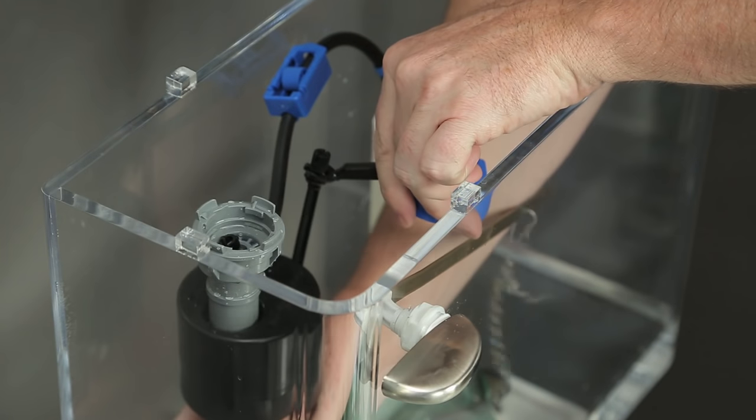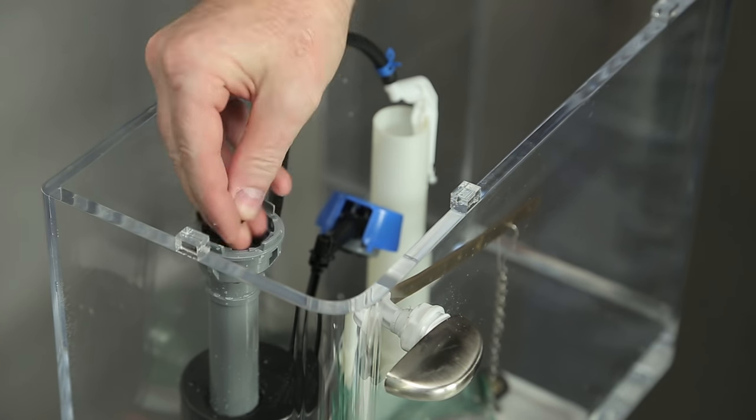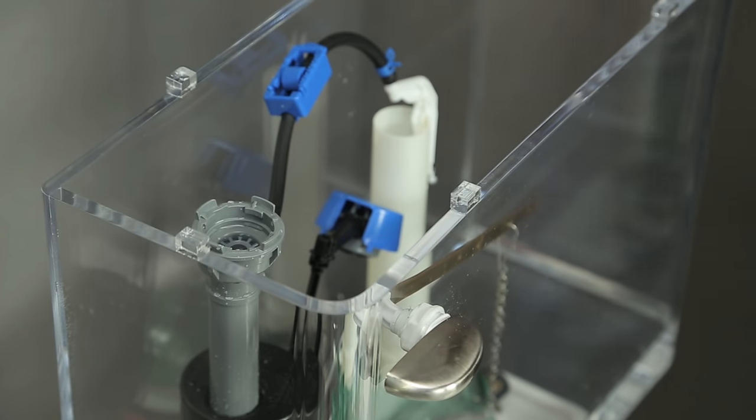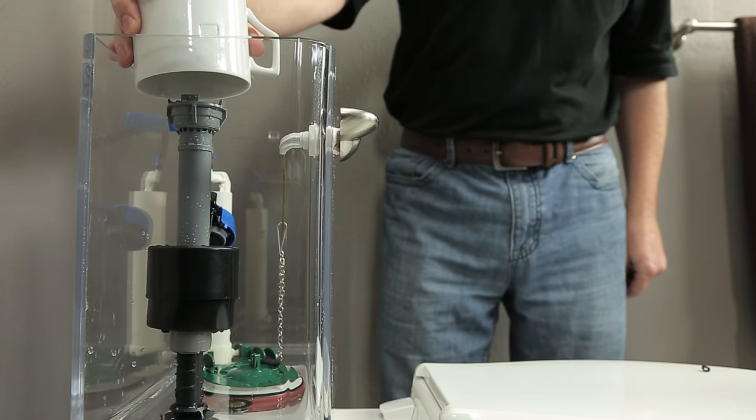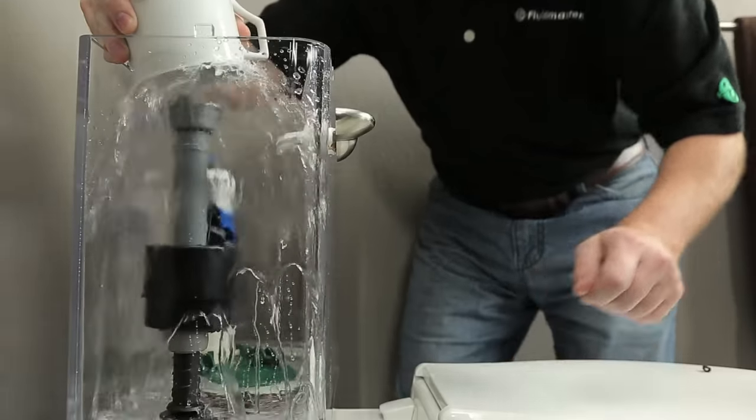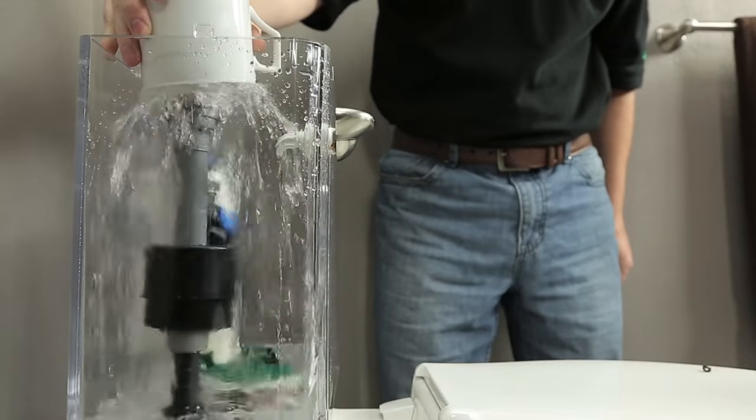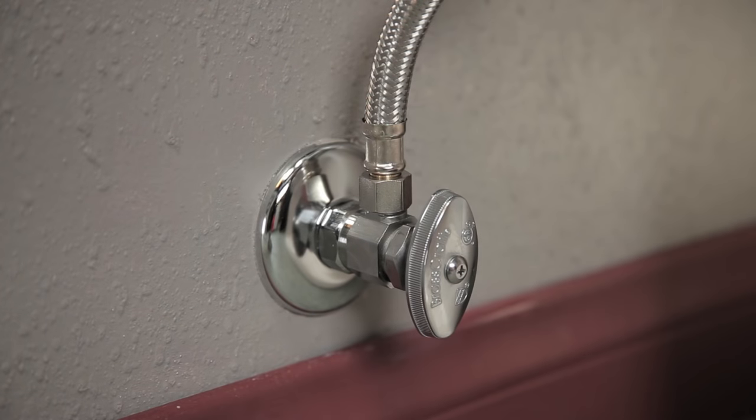Inspect the fill valve seat for any large particles or debris and remove by hand or with tweezers. You are now ready to flush debris out of your supply line. Hold a cup or mug over the top of the uncapped fill valve as you turn the water supply shutoff valve back on. Let the water flow for 10 to 15 seconds. Now turn the water off. Repeat this procedure as needed.